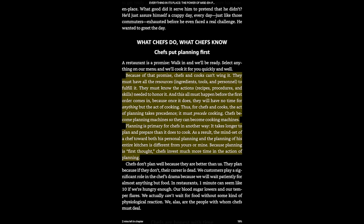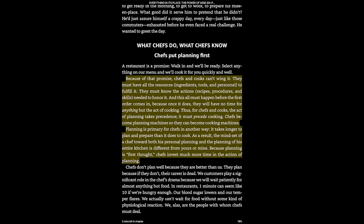You can just kind of tell there's a point being made in the structure of the language — 'because of that promise.' He's referring to a previous promise, but it doesn't really matter. Walking in, we'll be ready — there's nothing very insightful about that. It's kind of obvious, but then he actually makes an assertion. He says chefs and cooks can't wing it. That might seem obvious too, but it has interesting implications: chefs and cooks must have all the resources, ingredients, tools, and personnel to fulfill the promise of being ready. They must know the actions — recipes, procedures, skills needed to honor it. And then there's an additional qualification: all this must happen before the first order comes in, because once it does, they'll have no time for anything but the act of cooking. Then he makes a further point — you can tell there's a chain of logic. 'Thus, for chefs and cooks, the act of planning takes precedence. It must precede cooking. Chefs become planning machines so they can become cooking machines.'